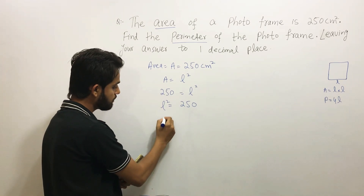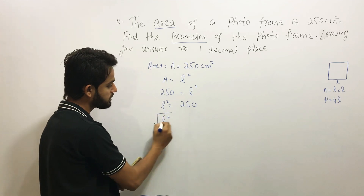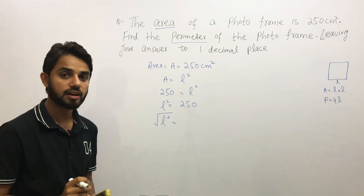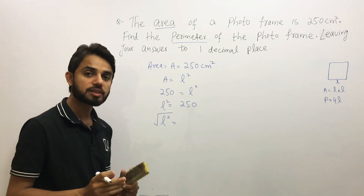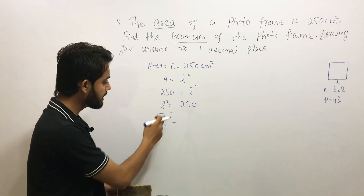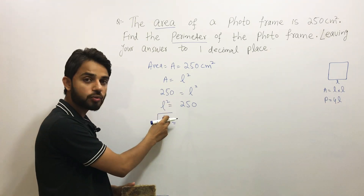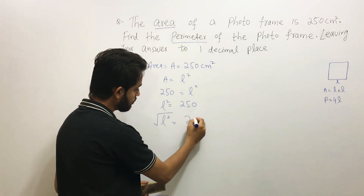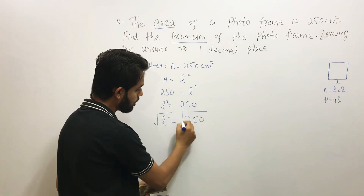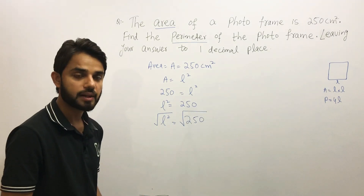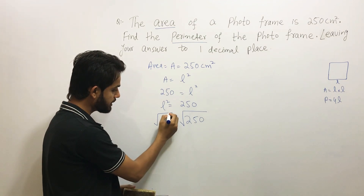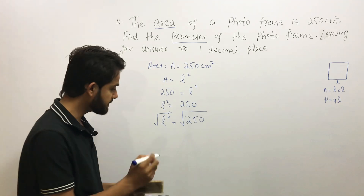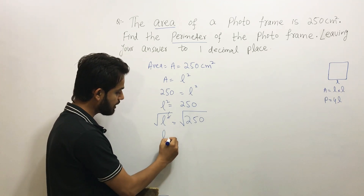To find L, we take the square root on both sides to eliminate the square. Since squaring and square root are opposite operations, they cancel each other out, leaving us with L on the left side. So we need to find the square root of 250.